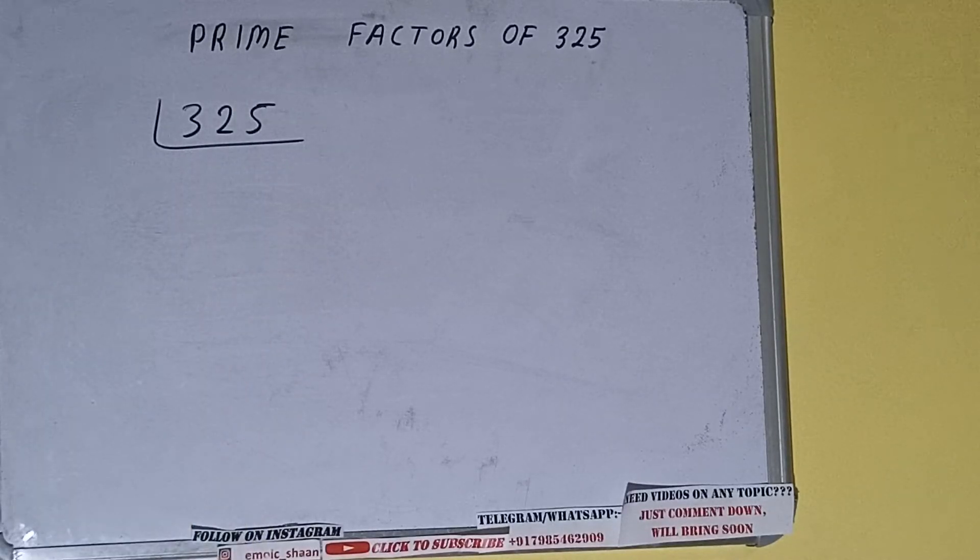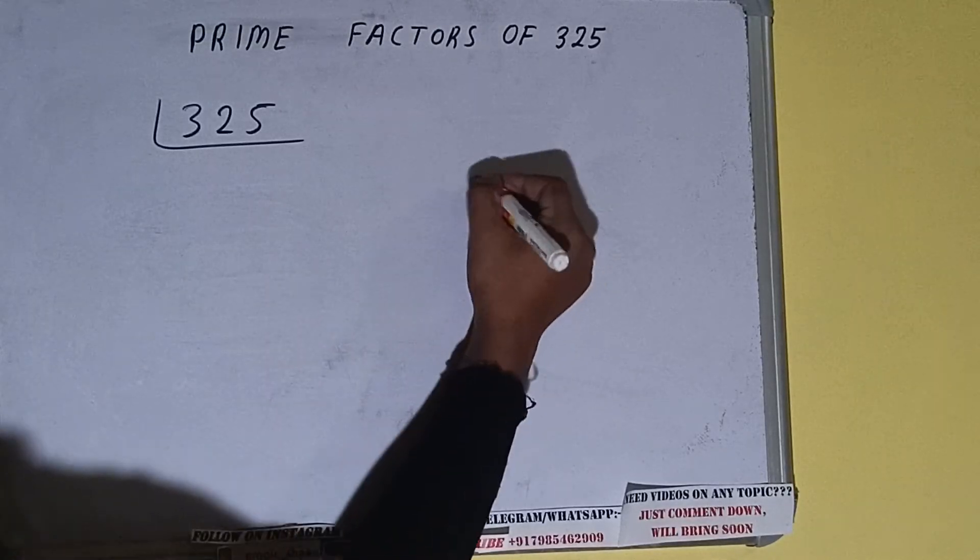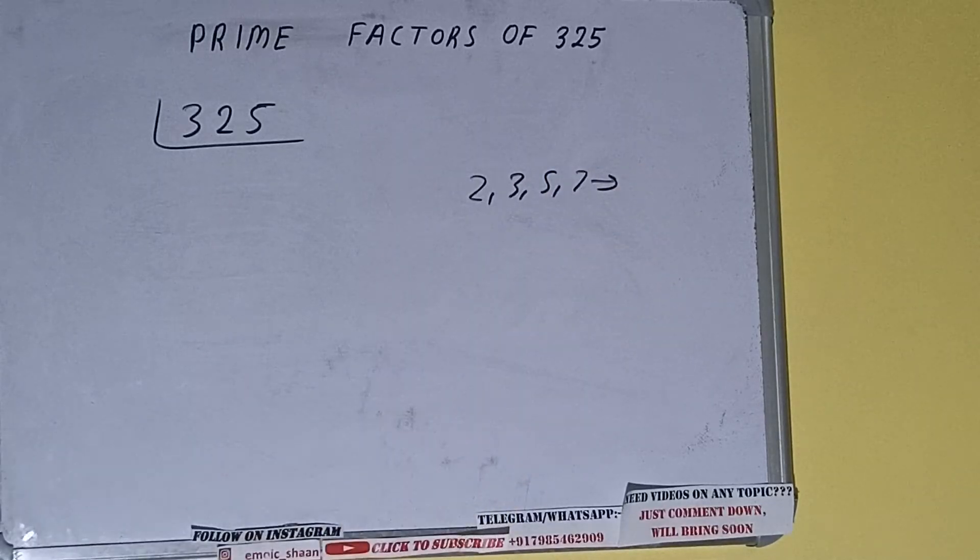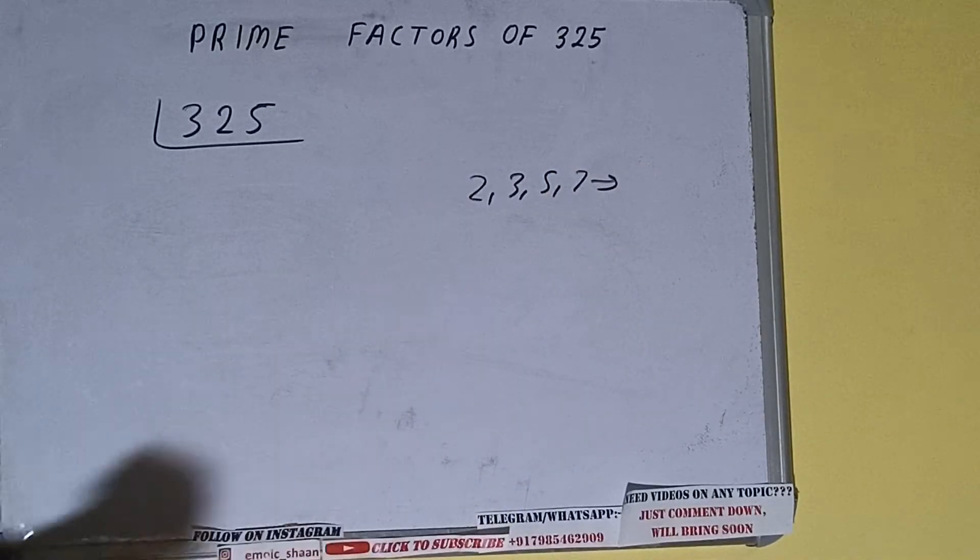The next thing we need to know about is what a prime number is. Prime numbers are numbers that are divisible by one and the number itself, like 2, 3, 5, 7, and so on. We'll check with the lowest prime number we have, that is 2.